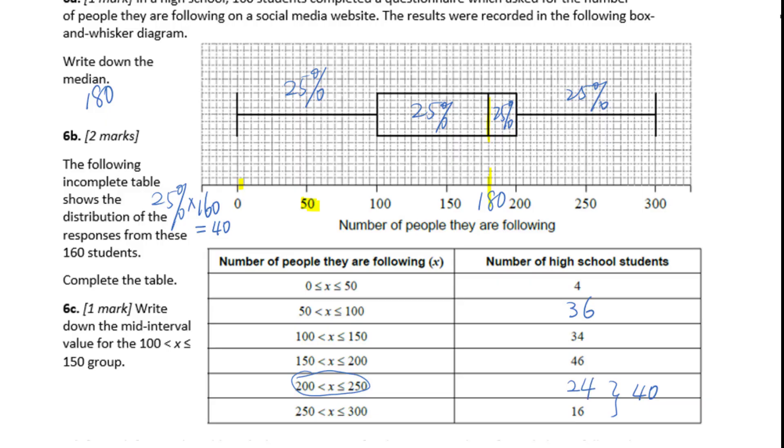For 6C, write down the mean interval value for x greater than 100, less than or equal to 150. That's 100 plus 150 over 2. That is 125.